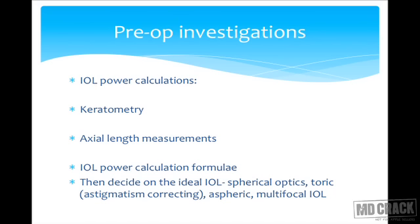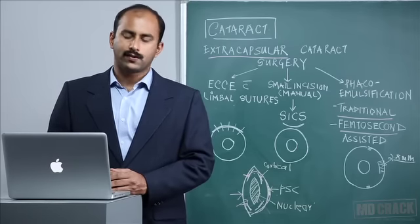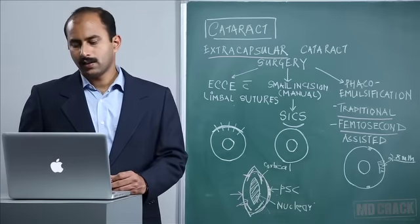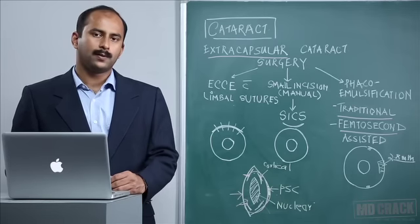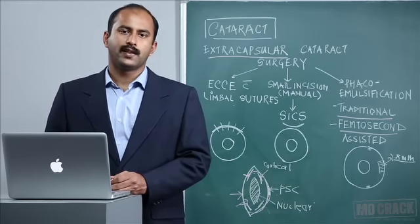The ideal IOL for the patient will suit the needs of the patient based on biometric measurements. If keratometry suggests corneal astigmatism, toric IOLs are available to correct that astigmatism. Other classes include conventional spherical IOLs, aspheric IOLs, and multifocal IOLs. The multifocal IOLs follow the diffractive principle and provide good distance, intermediate, and near vision at the expense of contrast.